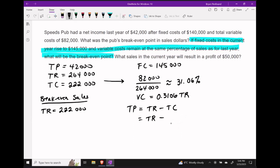We need to subtract our variable costs, which are going to be 31.06% of the total revenue. And then we're going to subtract off our fixed costs of $145,000.